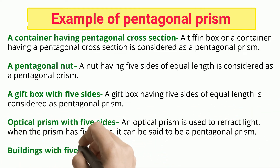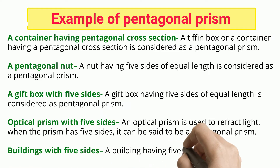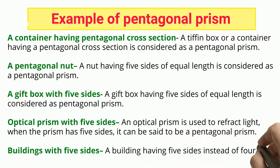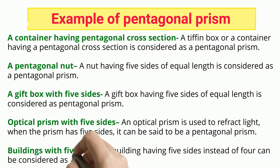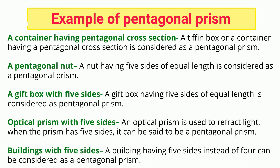Optical prism with five sides: an optical prism used to refract light, when it has five sides, can be said to be a pentagonal prism. Buildings with five sides: a building having five sides instead of four can be considered as a pentagonal prism.